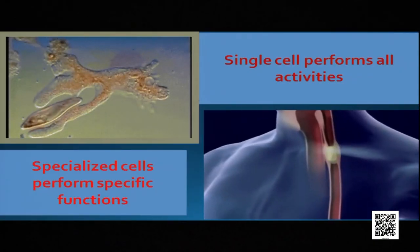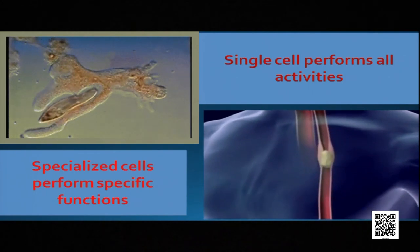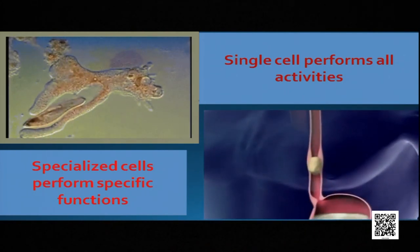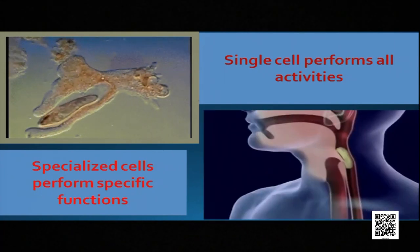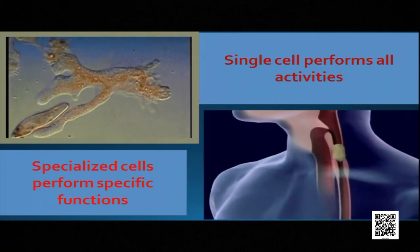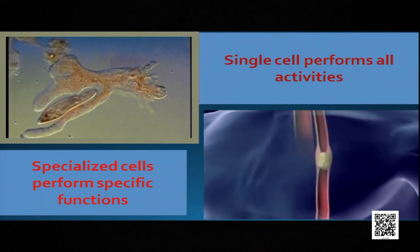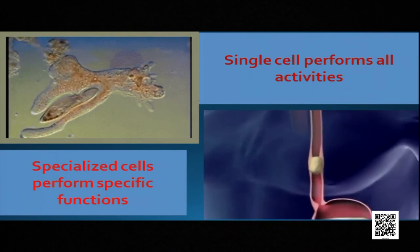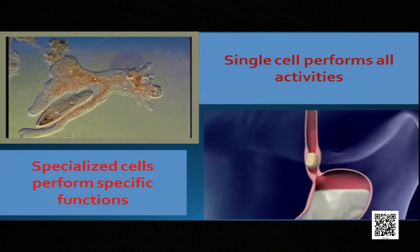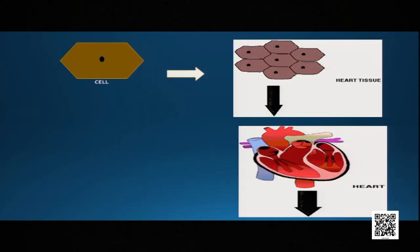Let us find out. In a unicellular organism, a single cell performs all the activities like nutrition, respiration, transportation, and excretion. But in multicellular organisms, specialized cells perform specific functions, and those specialized cells combine together to form tissues.